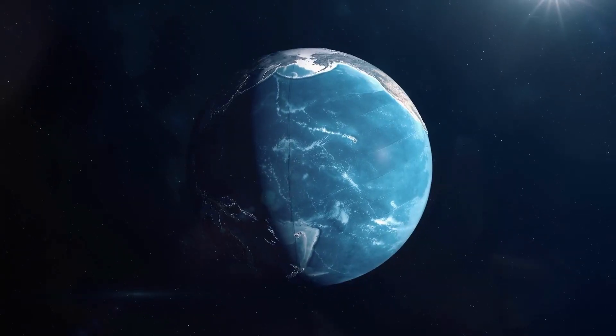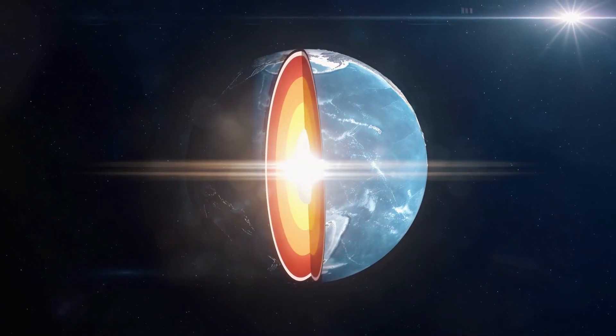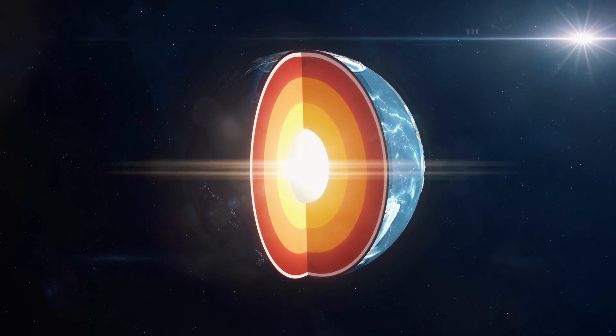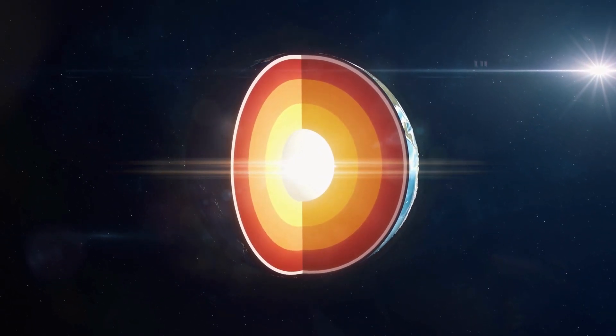Over time, any planet will settle out into different layers, with the heavier elements like nickel and iron sinking to the core, and the lighter elements staying at the surface.